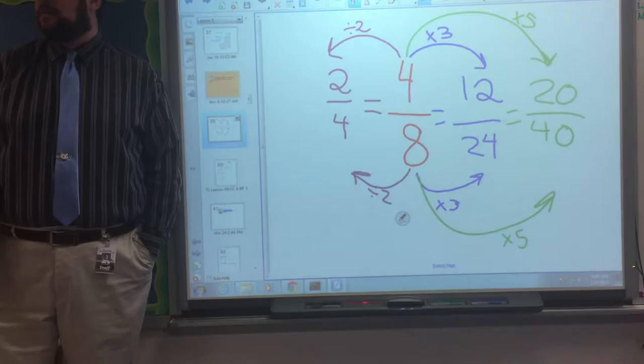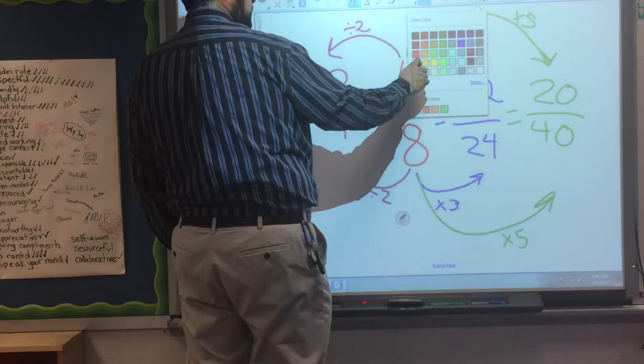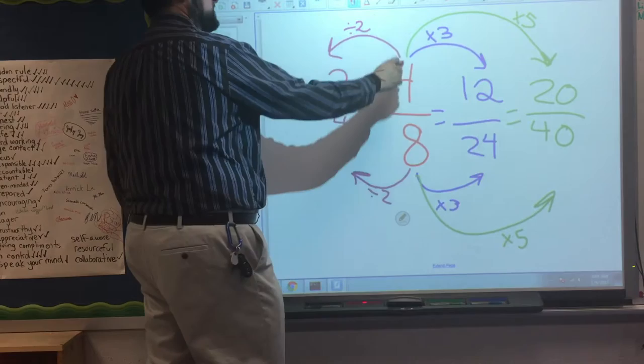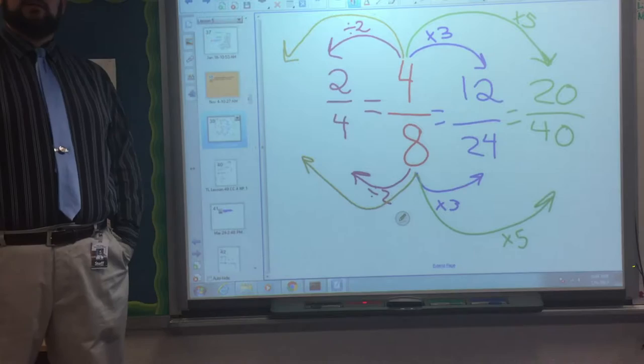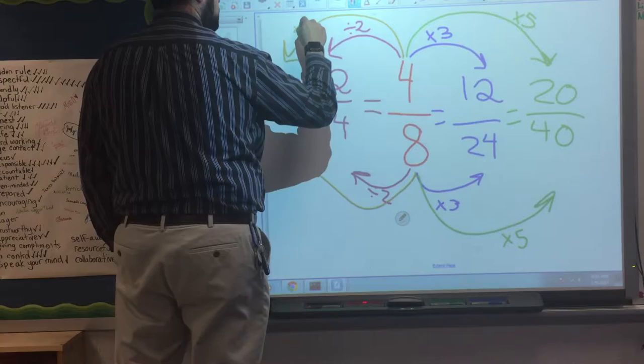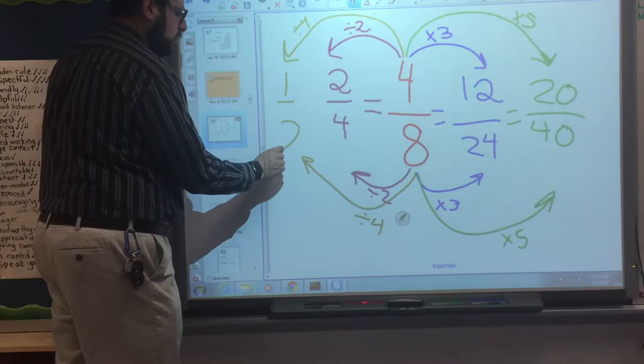Oh, but are we done? No. Oh, we could divide even more. We can simplify in other ways. Let's pick a color. Yellow, yellow, green. No, yellow would show up. Let's do a... Pink. Oh, pink won't show up either. Let's do like a little mustard color. Yeah, I know. What can I say? What's something that I can divide 4 by that I can also divide 8 by? 4. What do you think? 4. What's 4 divided by 4? 1. What's 8 divided by 4? 2. 2. What's my answer here? 1 half.